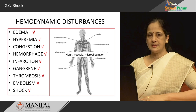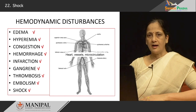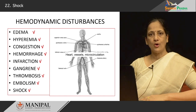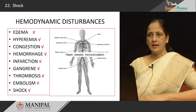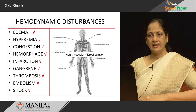In this series, we look at disturbances in circulation, be it at the level of the heart, in the arteries, arterioles, microcirculation, venules, or veins. Under this chapter, we have seen a couple of other topics like edema, hemorrhage, infarction, gangrene, and embolism.